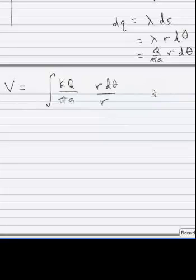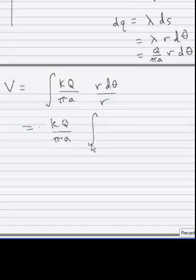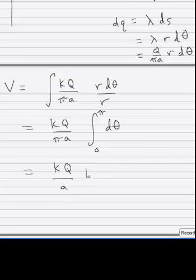Potential is a scalar quantity. And in this case R is a constant. R never changes. We're always at the same radius. So this just becomes KQ over pi A integral of D theta. And theta is going from zero to pi. So the answer is KQ over A.